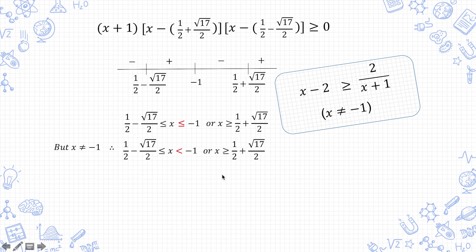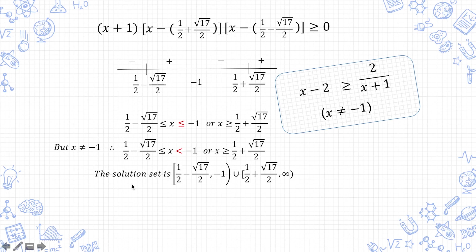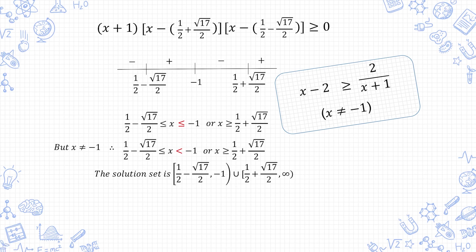Sometimes you can leave the answer like that, but other times the question will ask you to find the solution set, in which case you express the answer in interval notation or set builder notation. I'll demonstrate interval notation because it's easier. The solution set takes all real numbers from the left boundary to just below −1, where the square bracket means inclusive and the round bracket means not inclusive of −1. You can also take values from ½ + √17/2 to infinity, with a square bracket for the inclusive endpoint and a round bracket for infinity. The union sign in the middle means x belongs to either or both intervals.